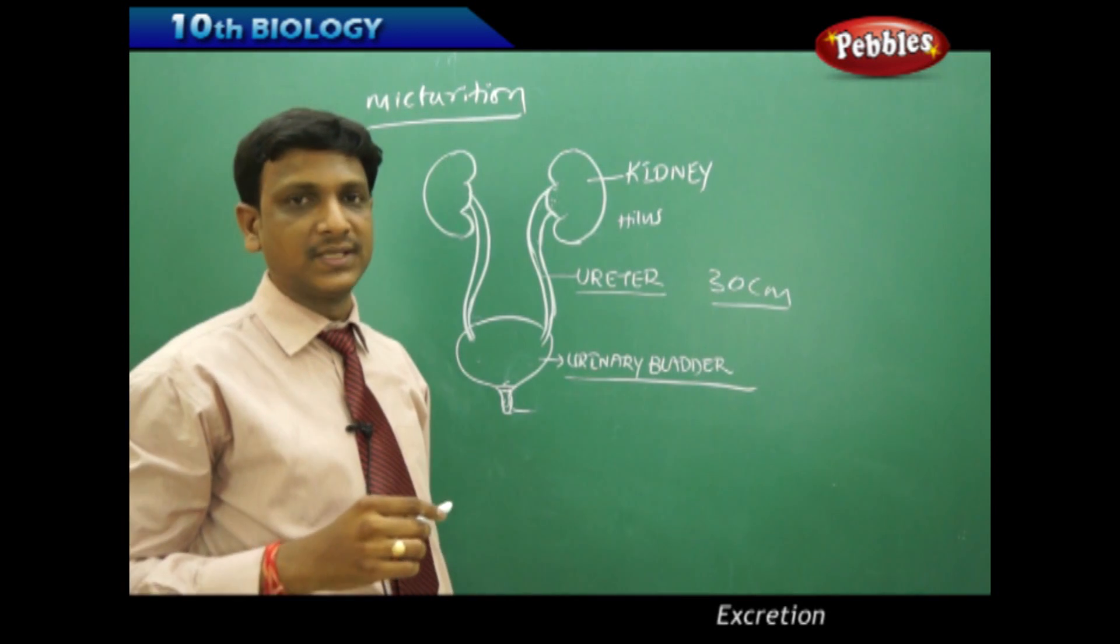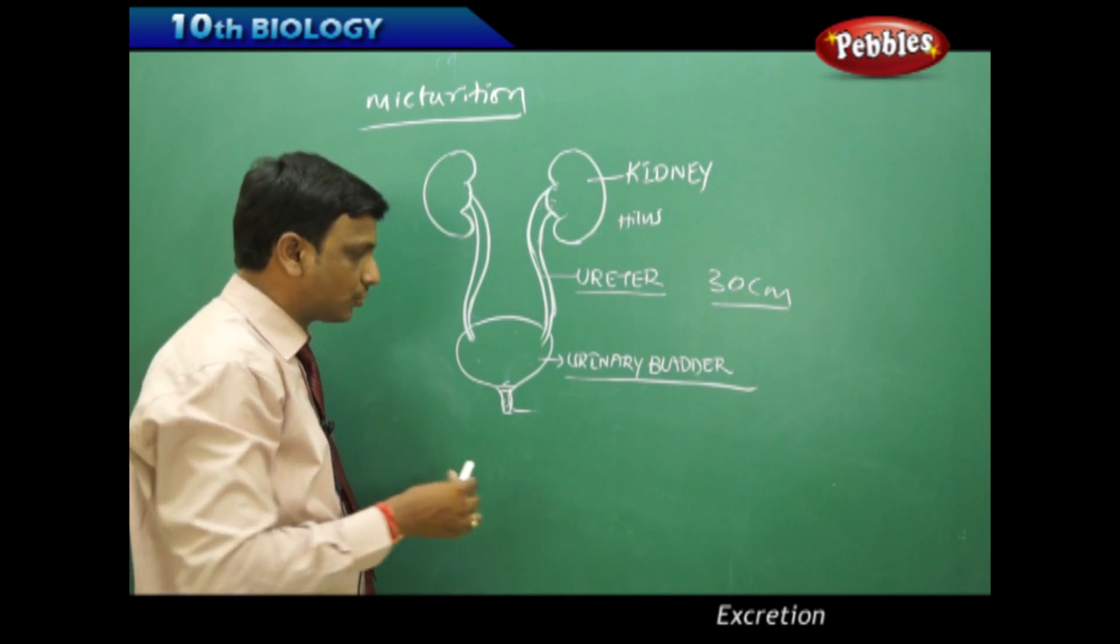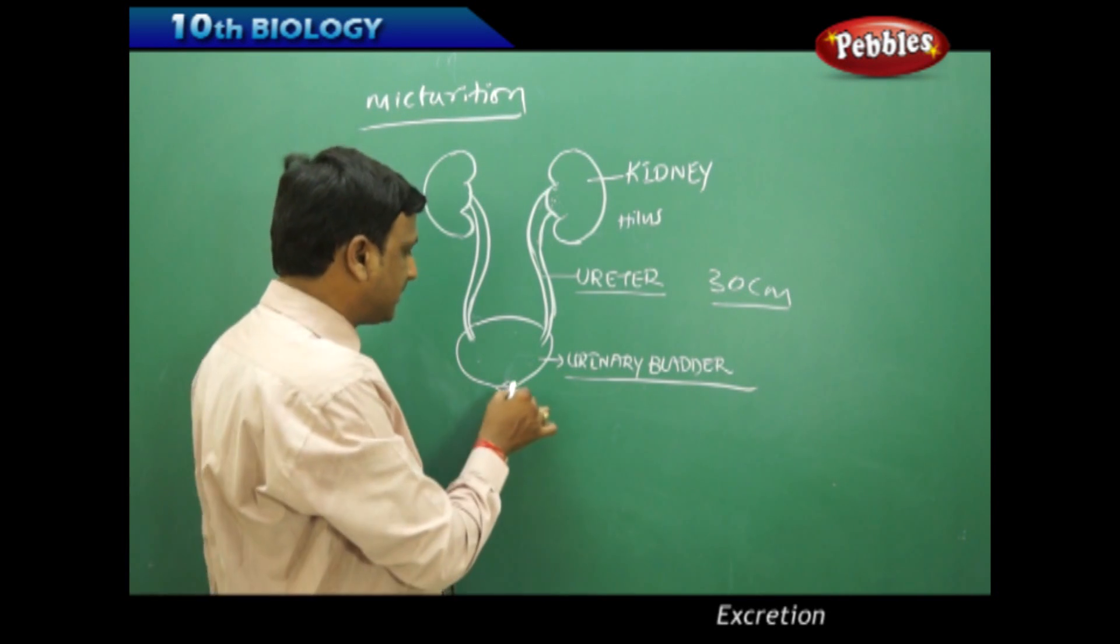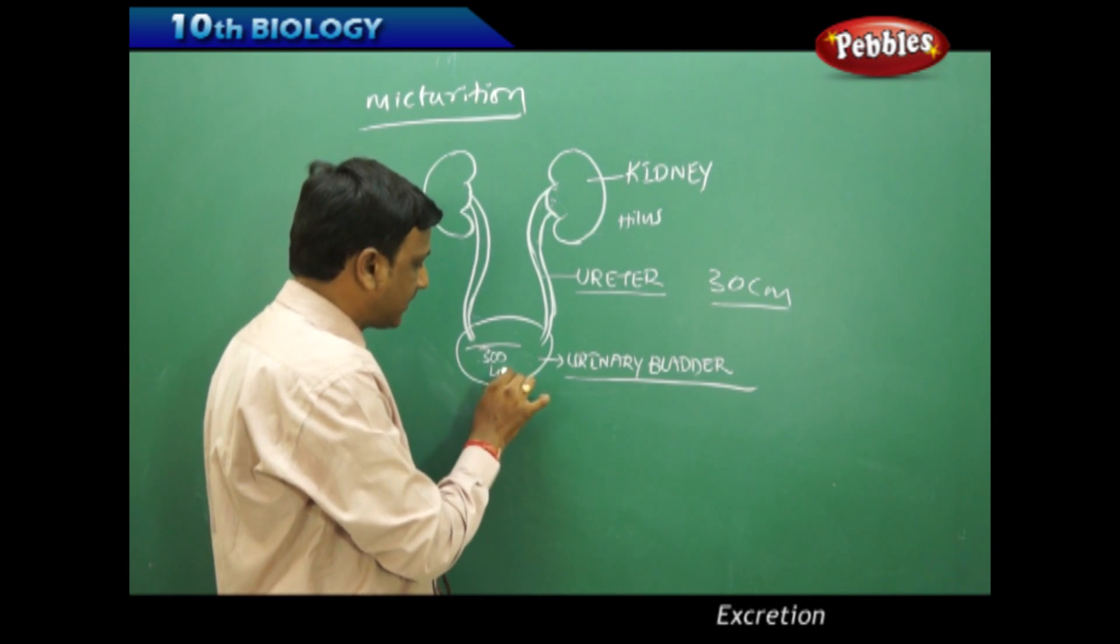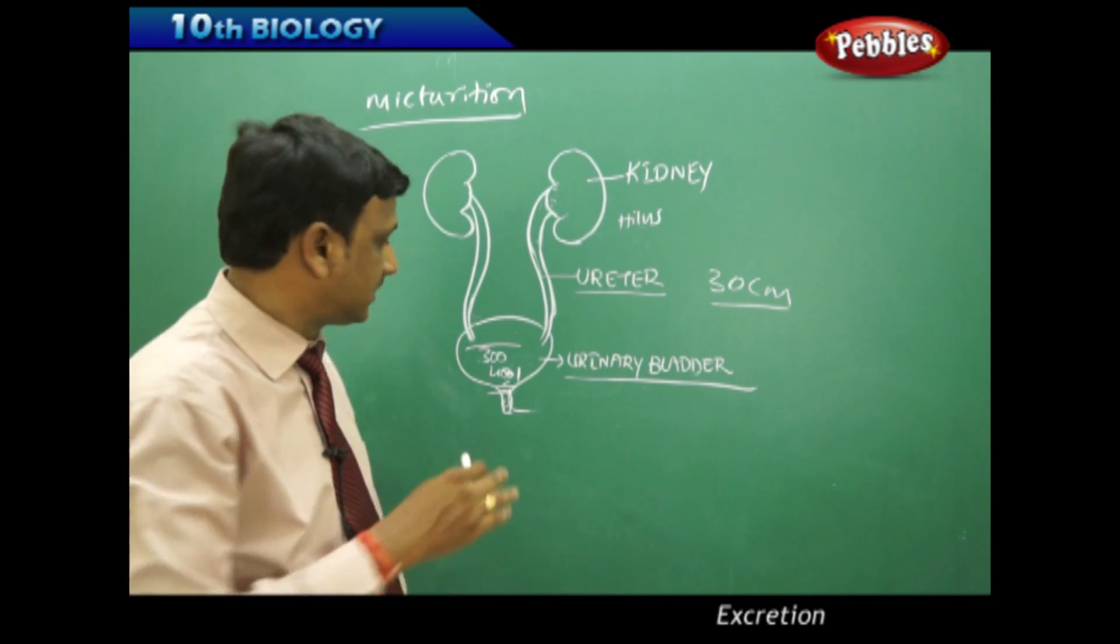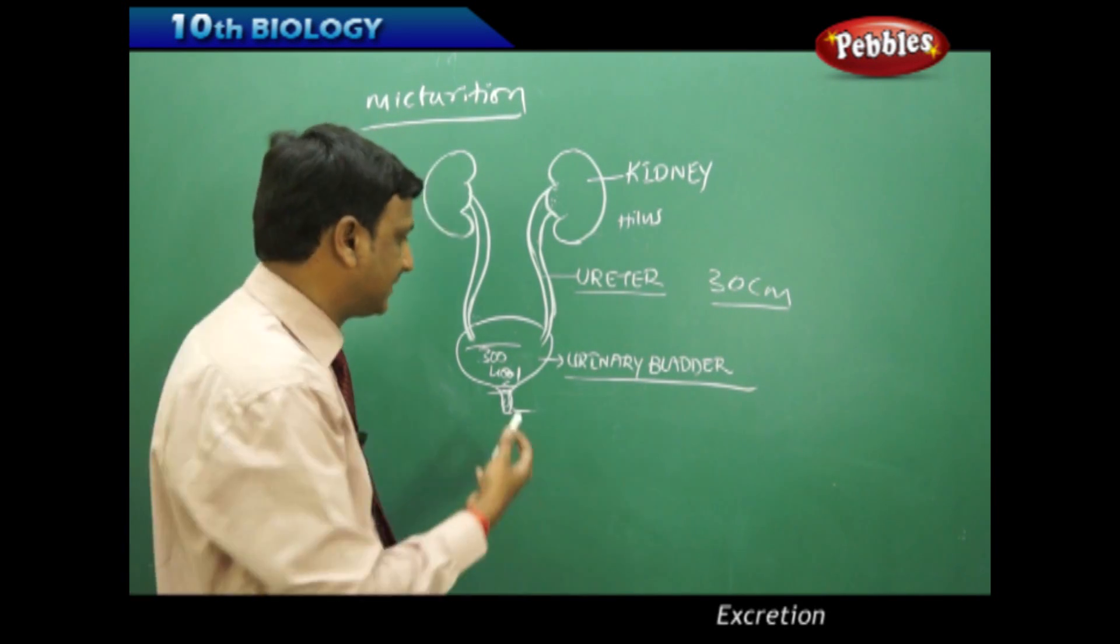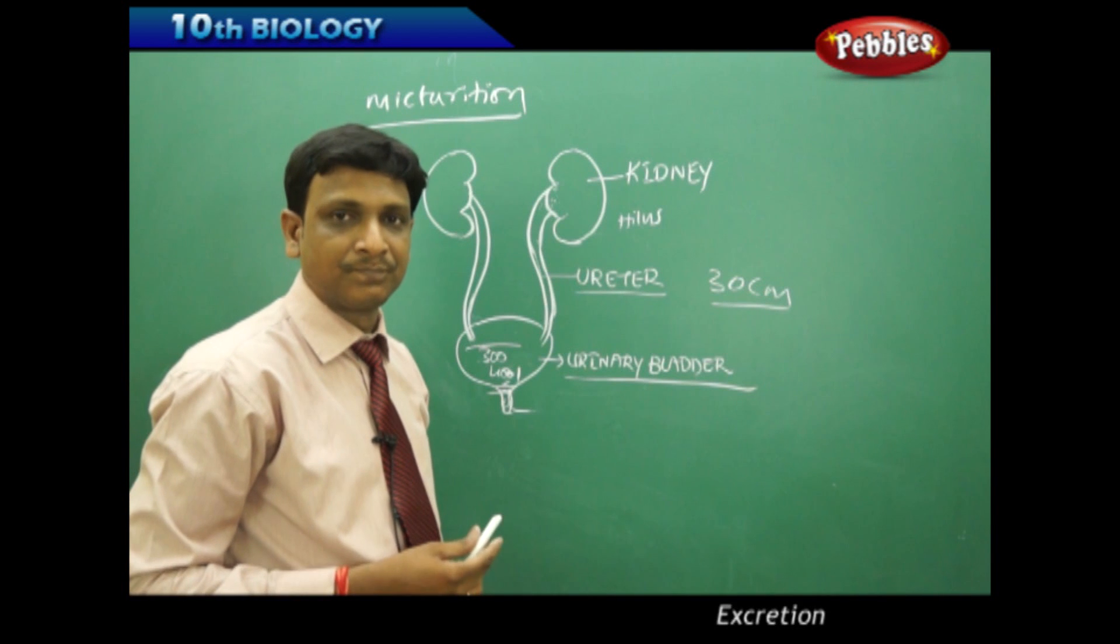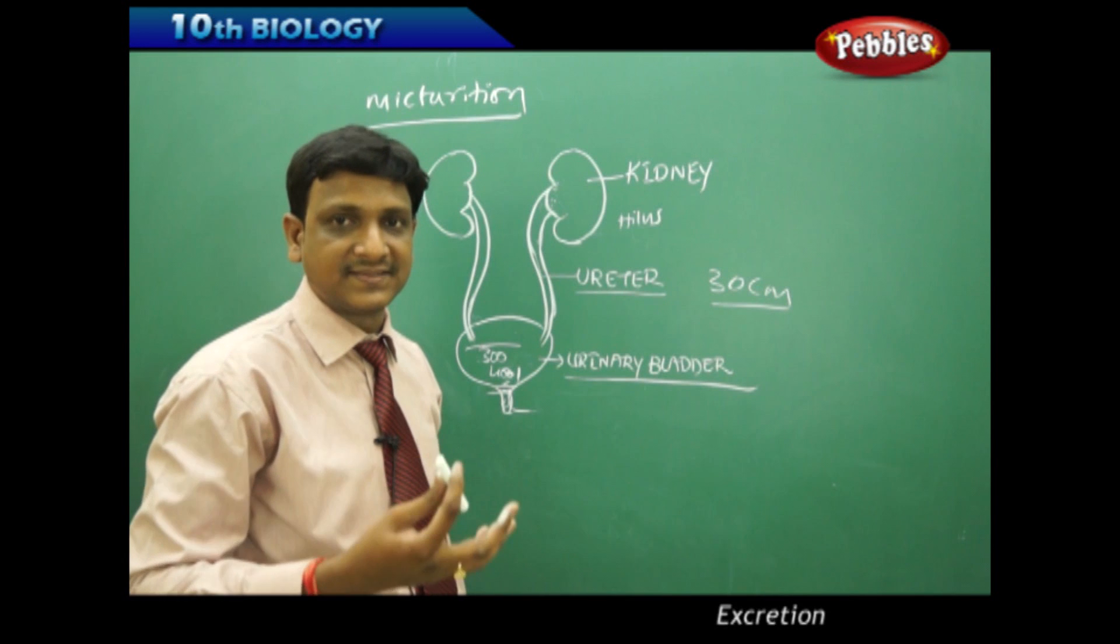How does micturition take place? The urinary bladder is controlled by two sets of sphincters, circular muscles—the upper sphincter and the lower one. When sufficient amount of urine is collected, say for example 300 to 400 ml (the actual capacity is 800 ml), some kind of pressure is exerted on the bladder. Because of the pressure, the first sphincter is relaxed due to a reflex action created by the nerves.